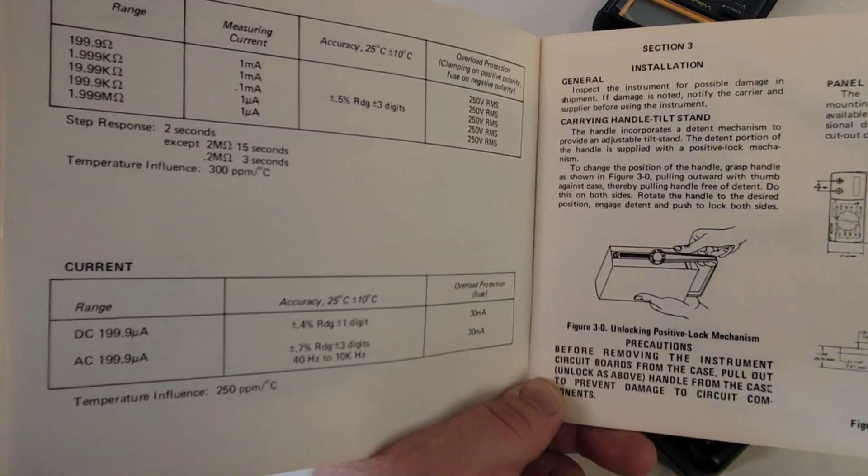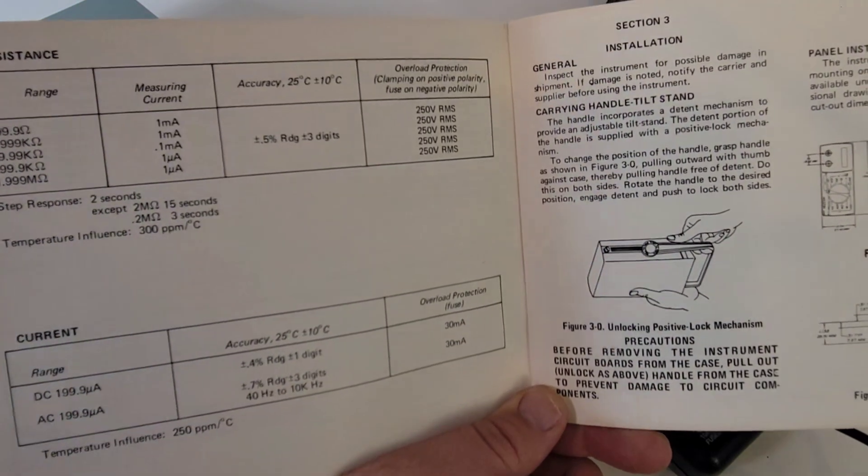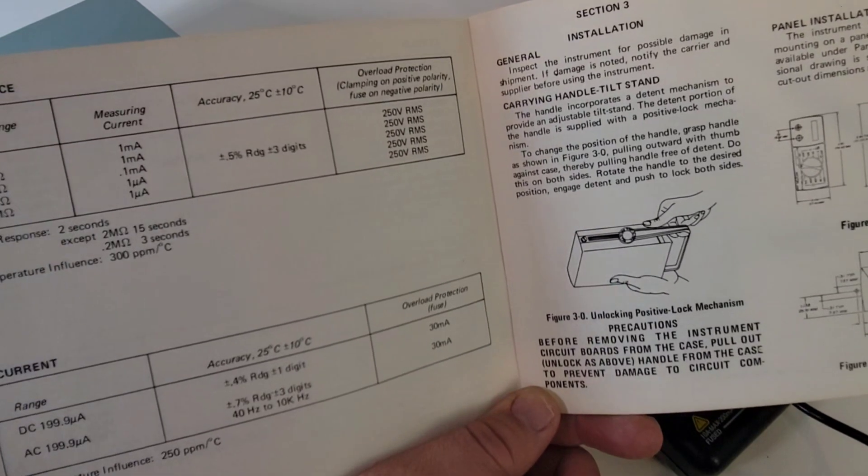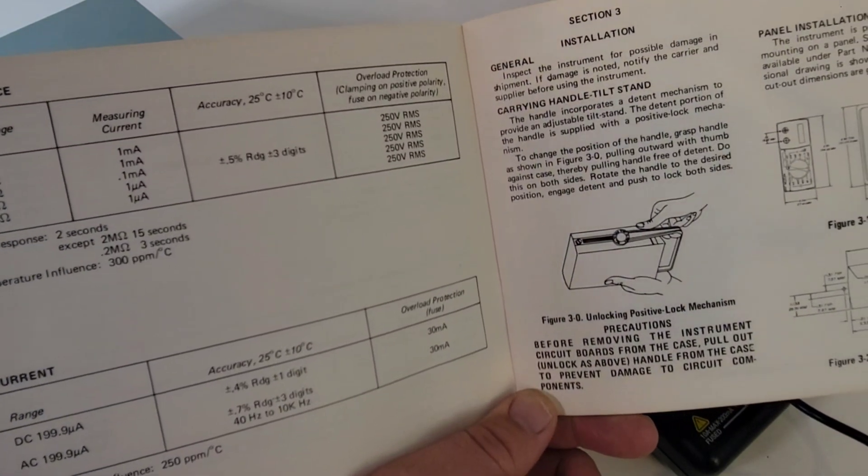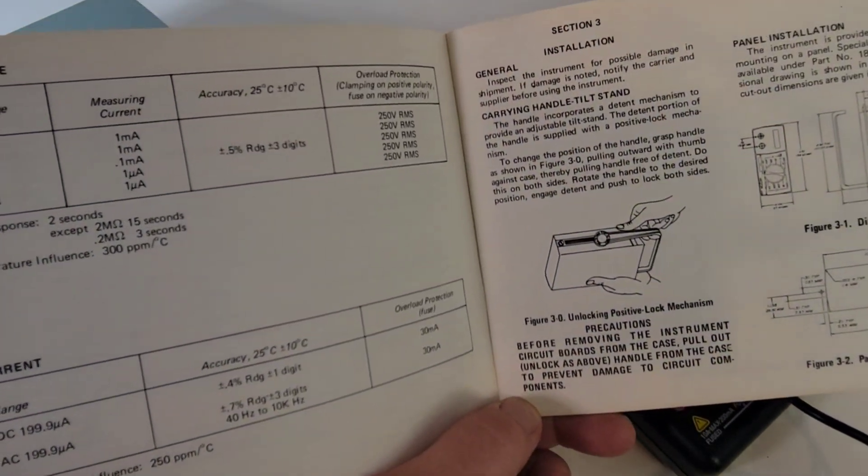By the way, in terms of current, don't expect too much. Yeah, it doesn't do a lot. 199.9, basically 200 microamps in DC or AC. Overload protection up to 30 milliamps. So not much going on.